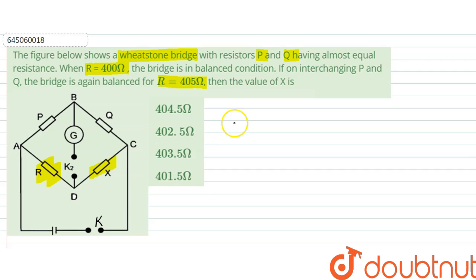So initially, when it is balanced, P by R should be equal to Q by X. Since it is R1 here, this is the first condition.